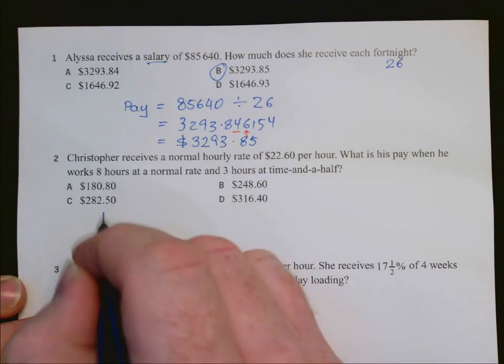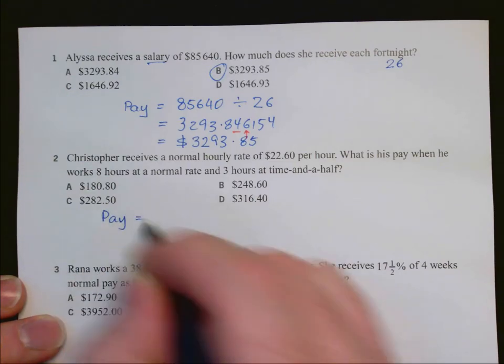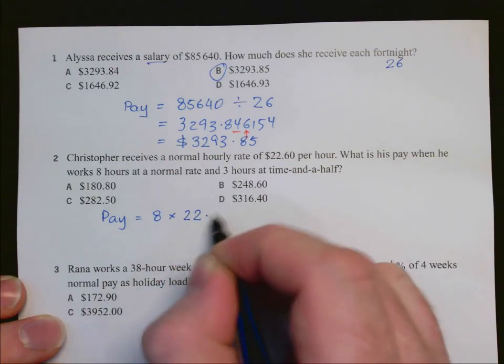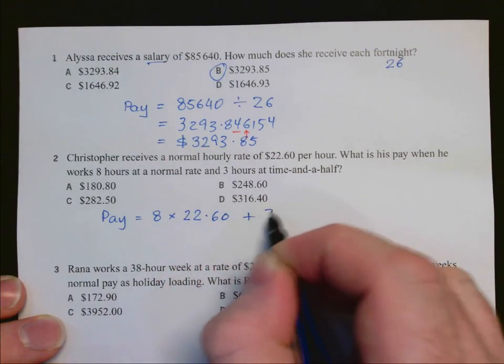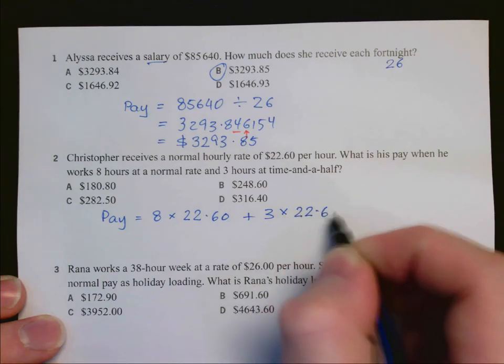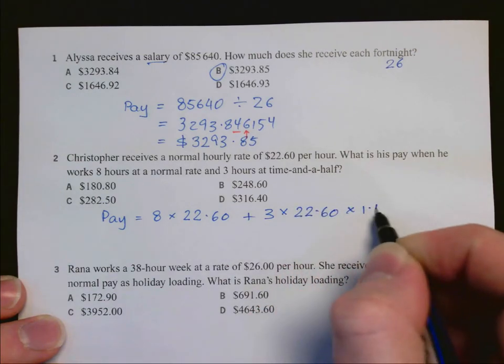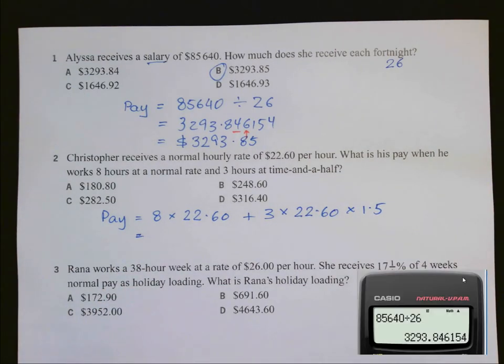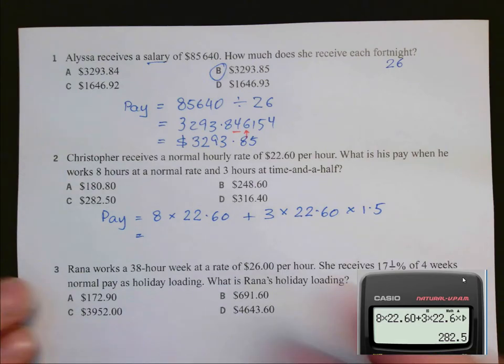Okay, so his pay is going to be 8 hours of his normal rate plus 3 hours at time and a half. So 3 hours at that rate times the factor of 1.5 for the overtime. And again put that onto our calculator. So we've got 8 times 22.60 plus 3 times 22.6 times 1.5 and we get $282.50. So the answer is C.